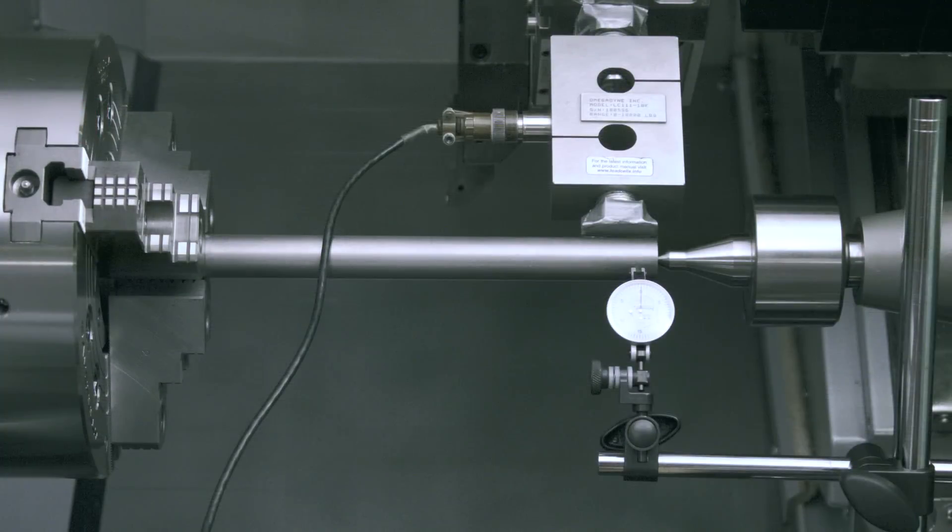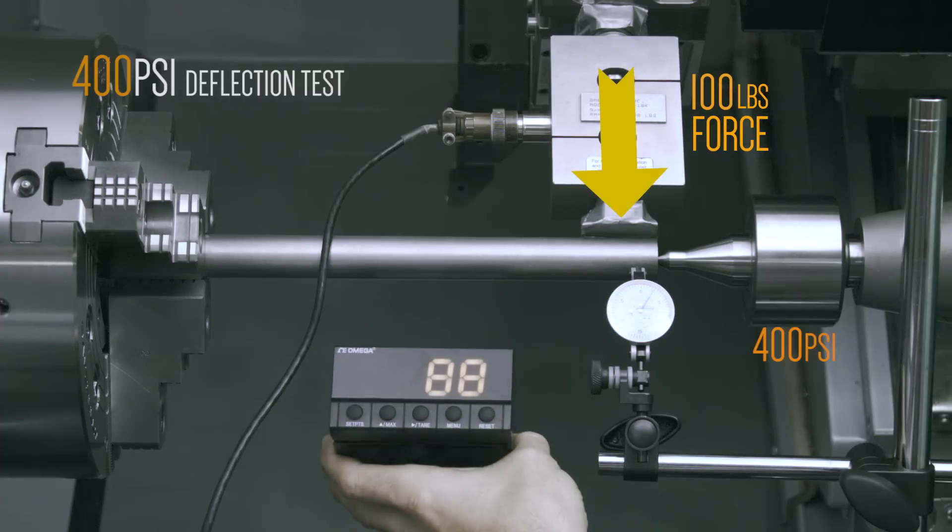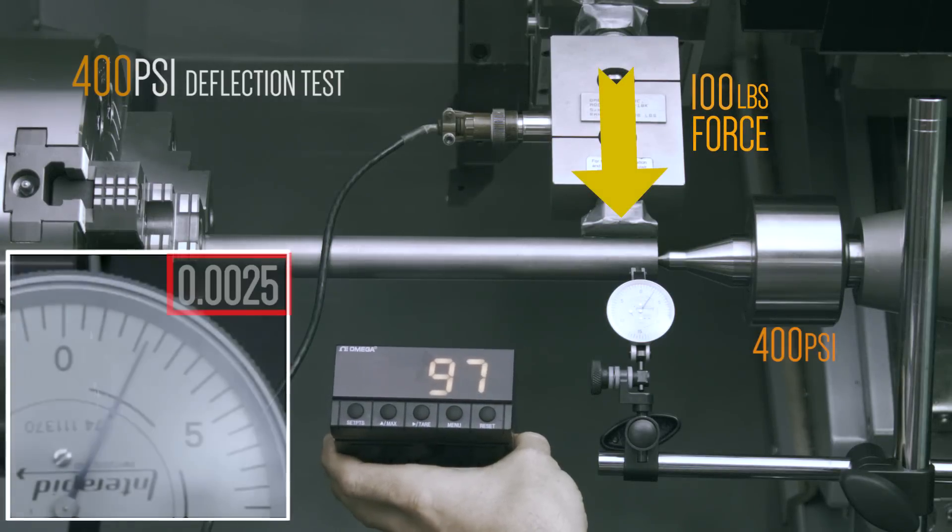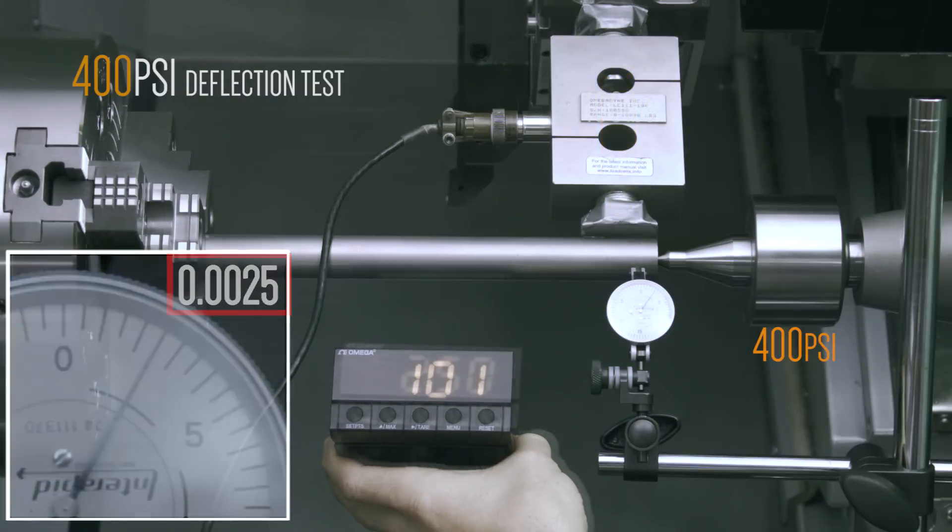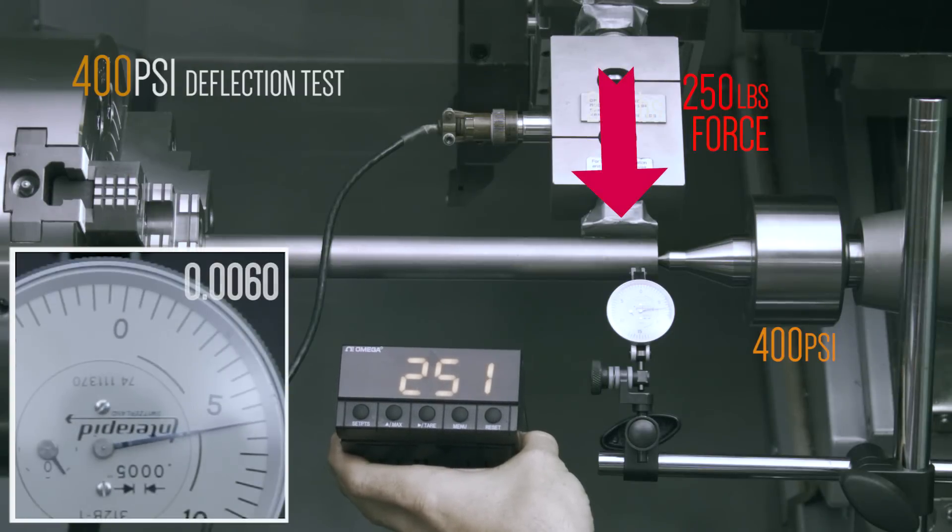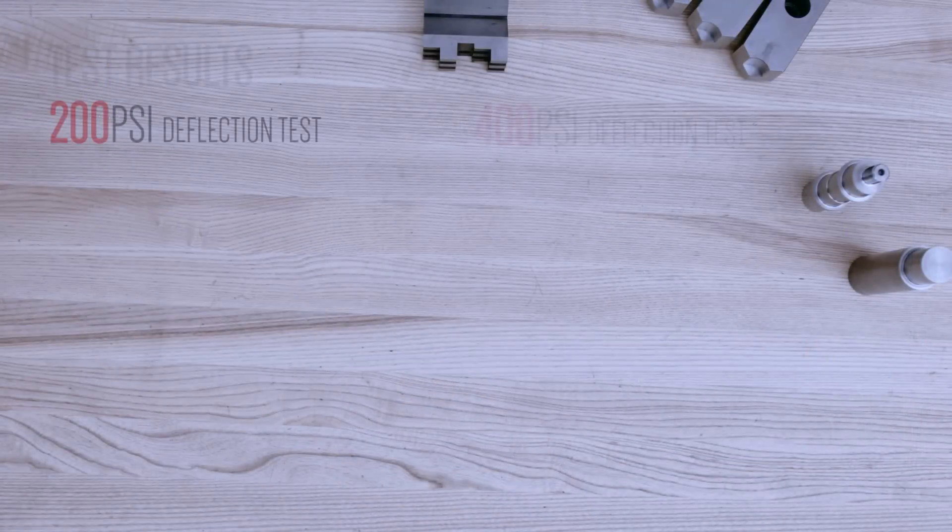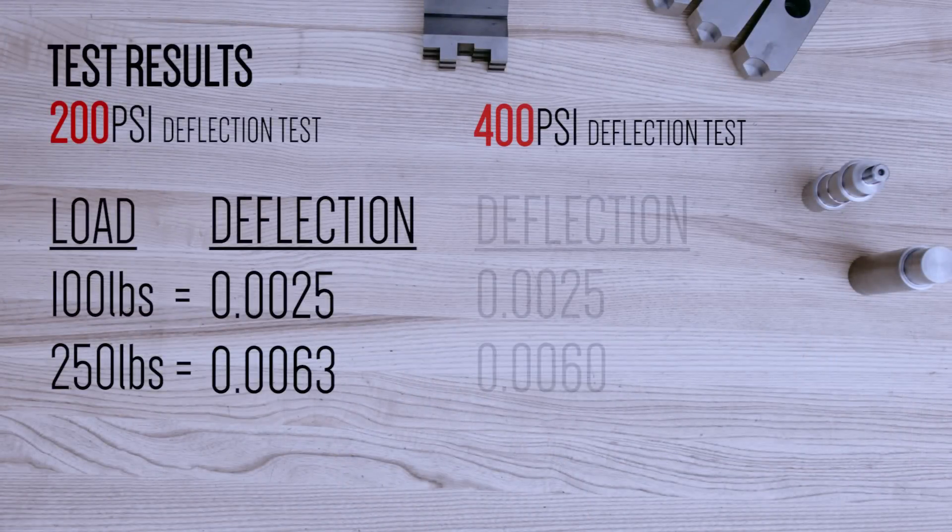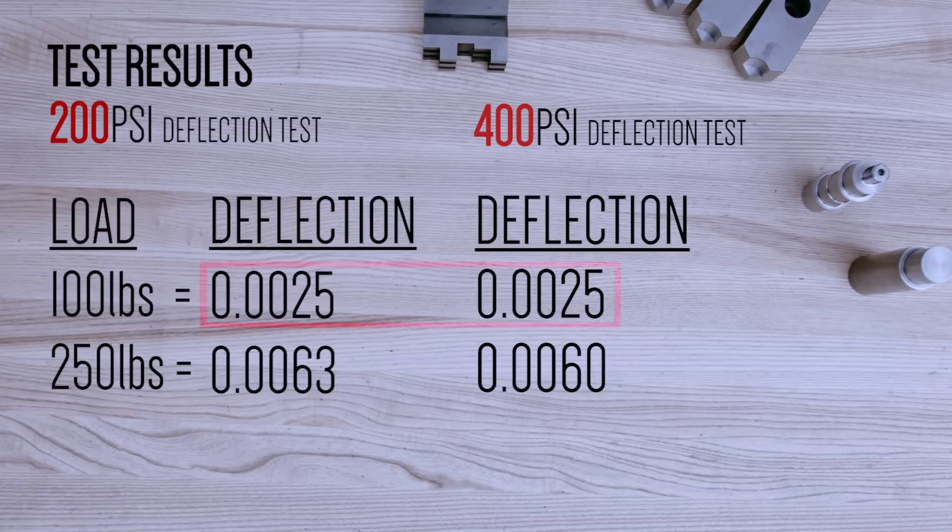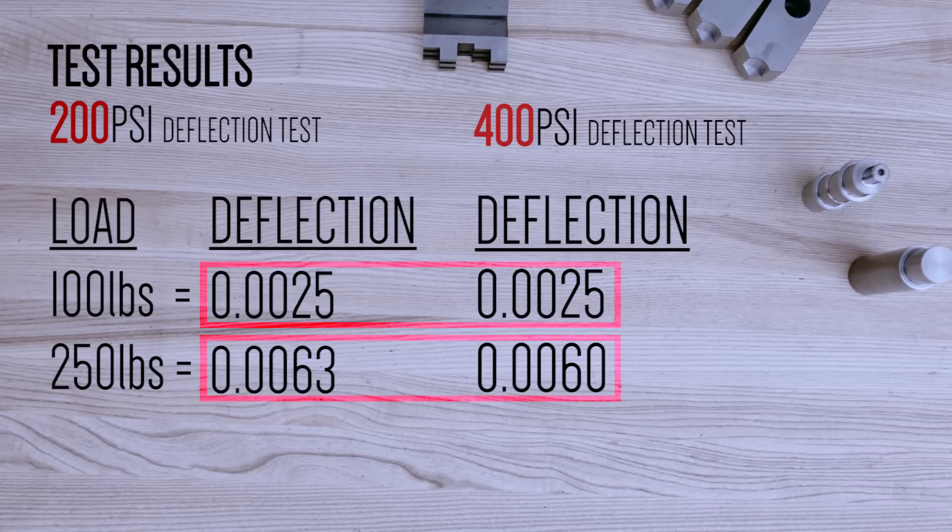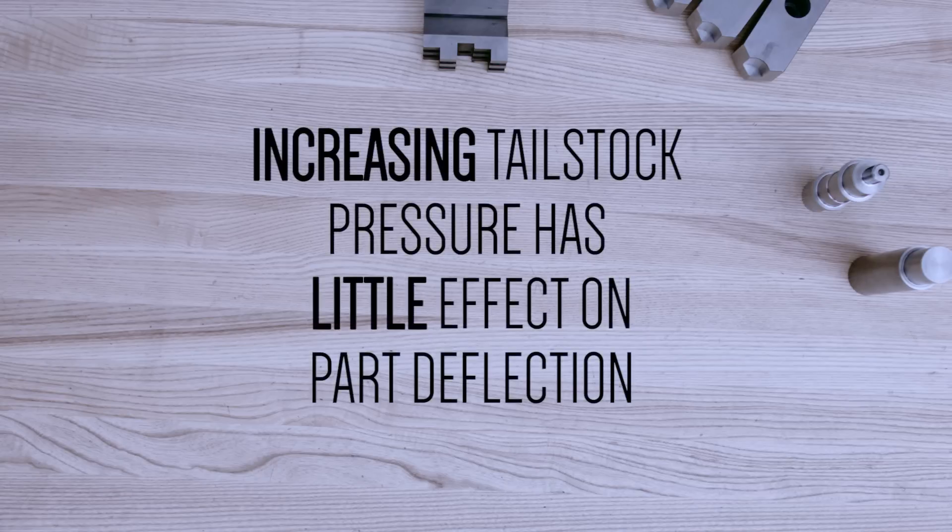For the next test, everything's the same, except this time we're going to use a tailstock force of 400 psi. At the 100 pound radial load, we get 2 thou 5 tenths again. And at the 250 pound radial load, we get 6 thou, which is only a few tenths different. Let's take a look at these results side by side and compare. As you can see, there is no difference for the 100 pound load and just a slight difference at 250 pounds. Okay, that takes care of our static test and the results are clear. Tailstock pressure had little effect on part deflection.